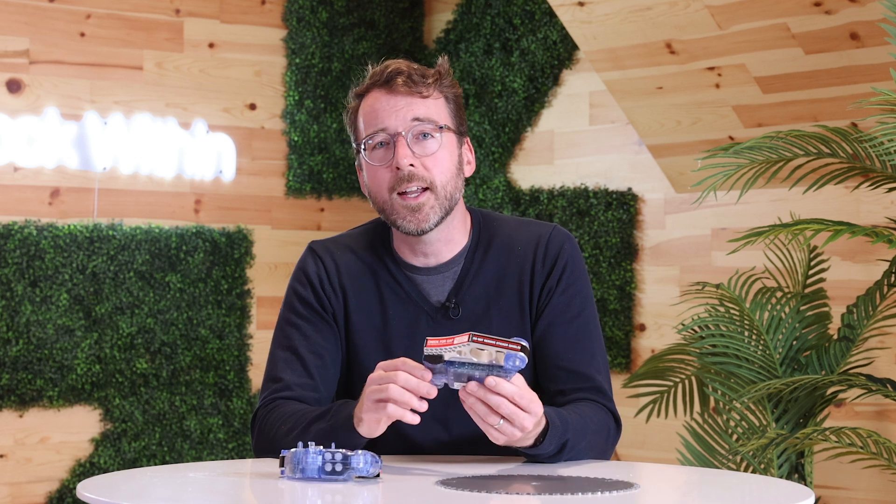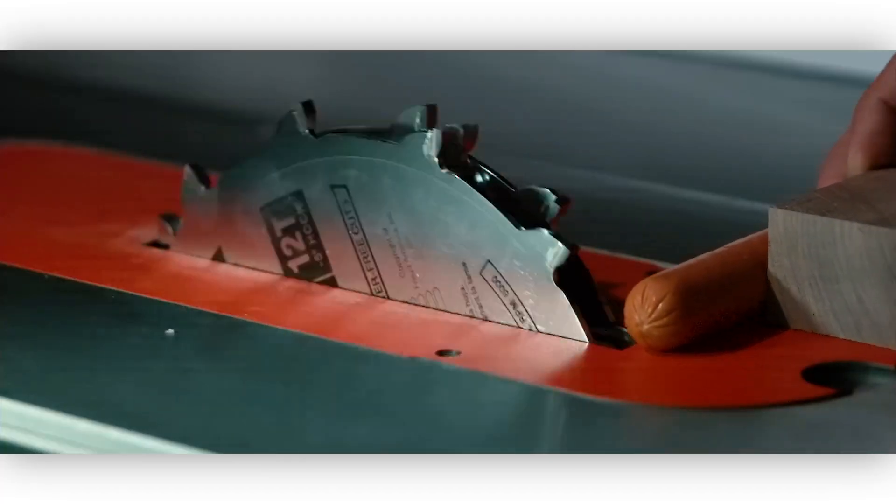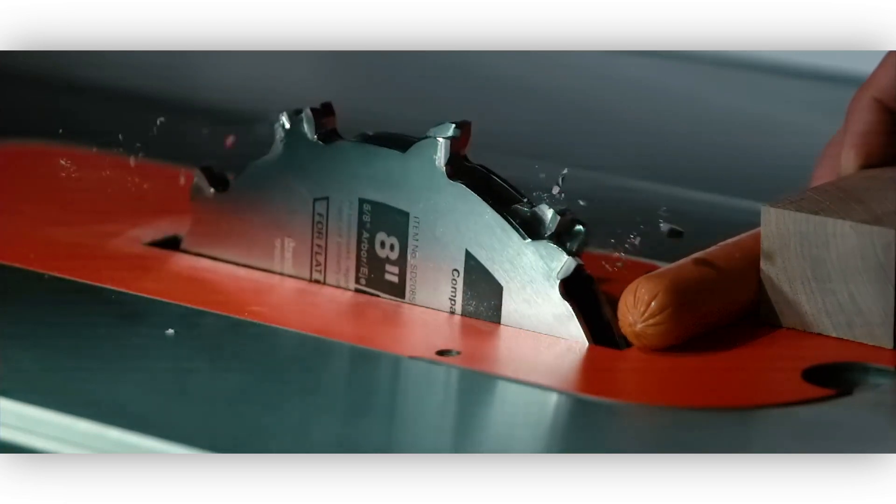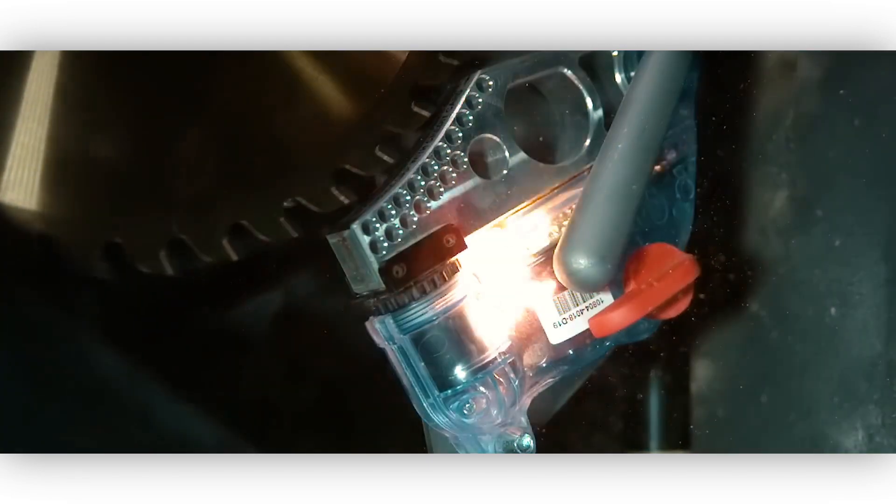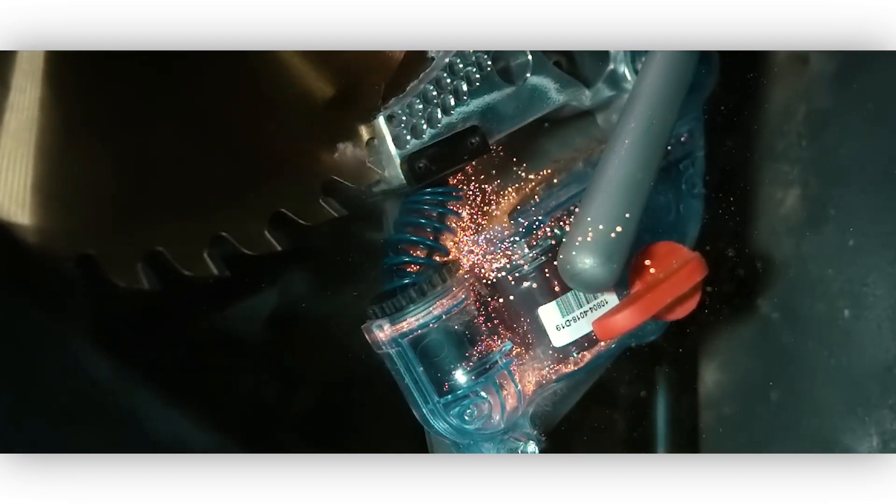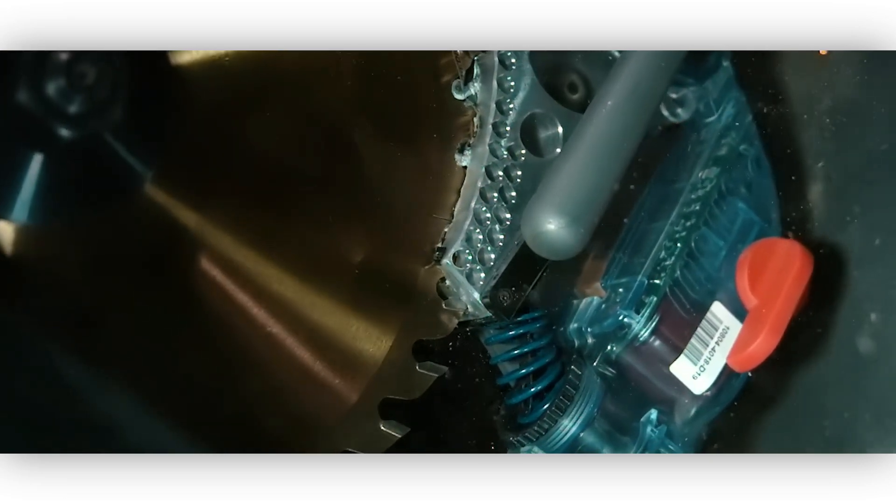When the saw is on, an electric current runs through the blade, which is continuously monitored by the brake cartridge. When this current is disrupted, say when an object like a finger or a hot dog hits the blade, the digital signal processor, or DSP, releases the pawl upward. It catches the spinning blade, stopping its rotation and causing it to drop down below the table surface under its own momentum.